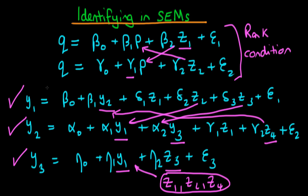This condition has a name in the general equation framework: it's known as the order condition. The order condition states that in order for each of the parameters in an equation to be identified — in other words, in order to estimate them — we need a list of exogenous variables which is at least as large as the list of endogenous variables within that particular equation. Importantly, those exogenous variables cannot be included in that equation. This is the order condition, and it determines whether we can estimate each of the parameters in simultaneous equation models.